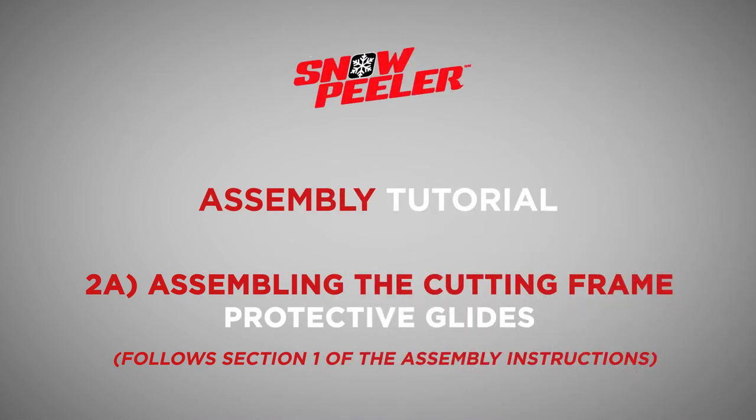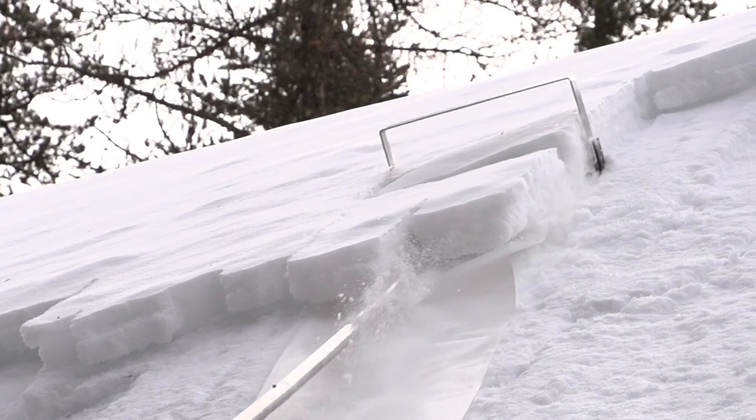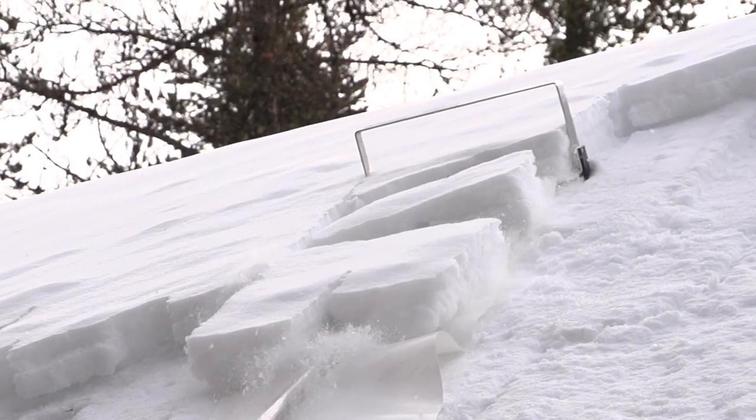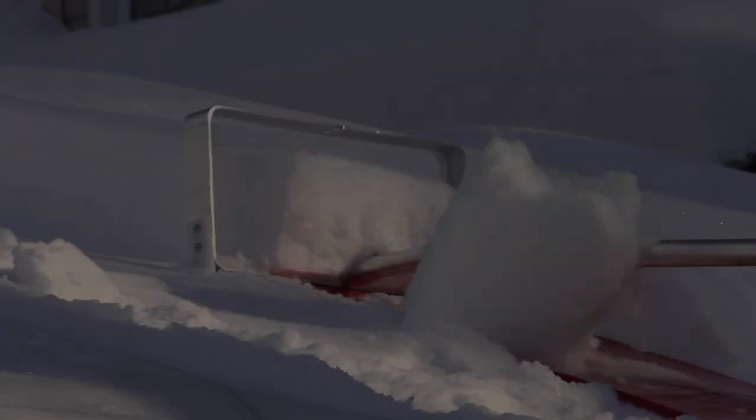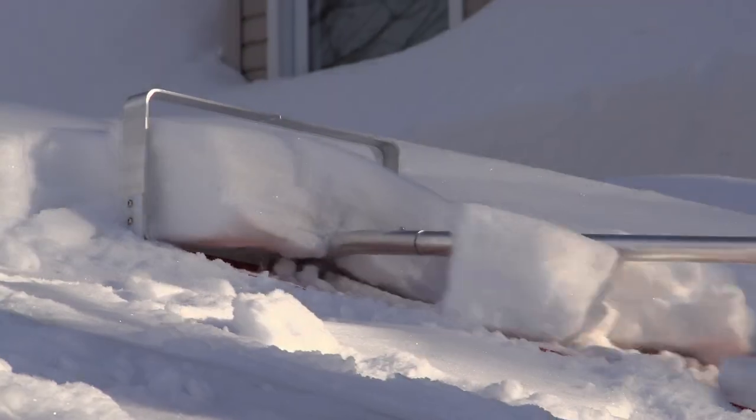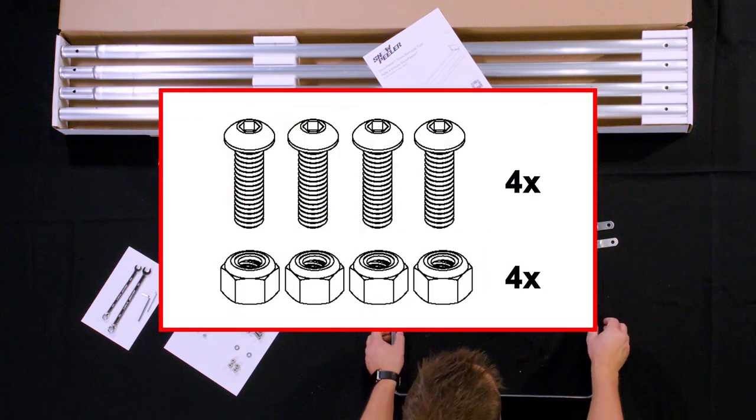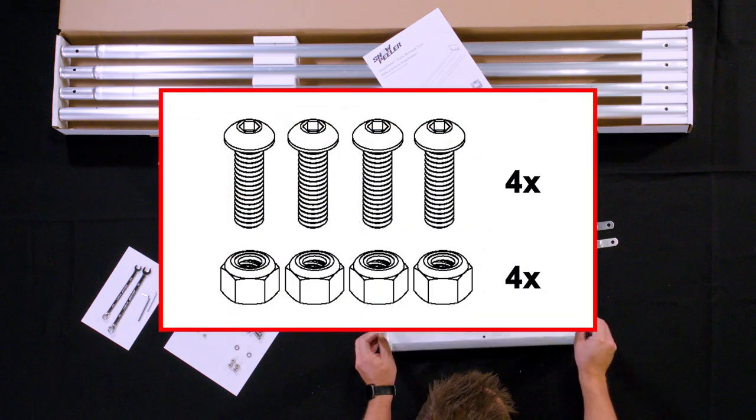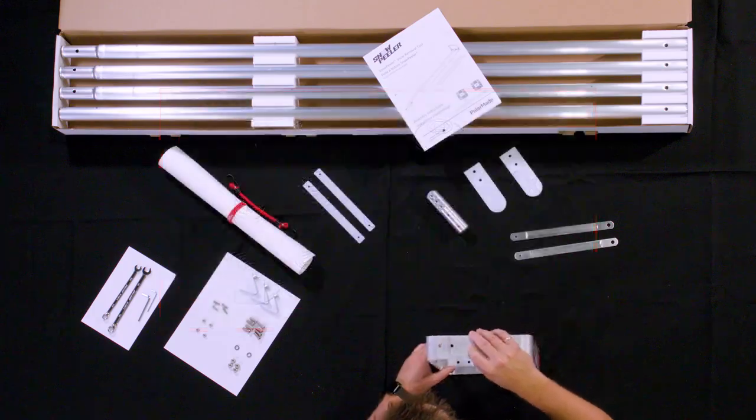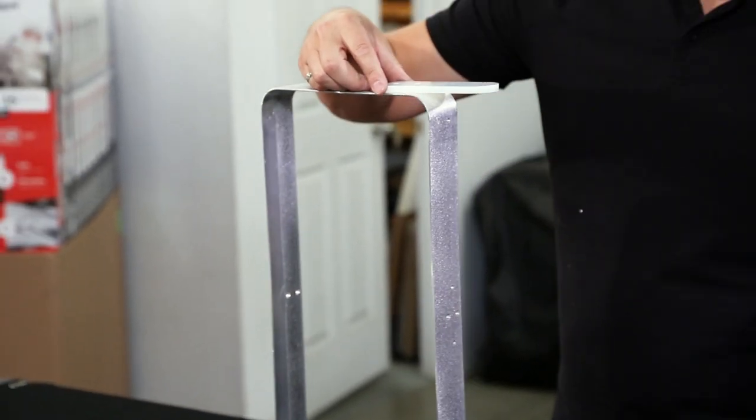In this section we'll prepare the cutting frame which involves assembling the protective glide pads and the slide. The protective glide pads provide clearance between your roof and the lower edge of the cutting frame. When mounted the glide pads provide a clearance of two and one quarter inches. To install the glide pads you'll use four quarter inch round head hex screws and four quarter inch nylon lock nuts. Insert the first two screws through the protective pad and into the cutting frame.